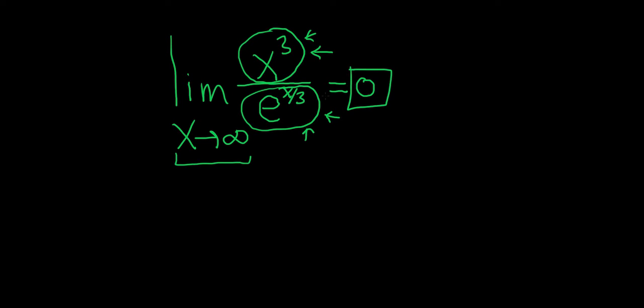And that's it. So whenever you have an exponential on the bottom and any type of polynomial on the top, the answer is automatically zero because the growth rate of exponentials is faster.